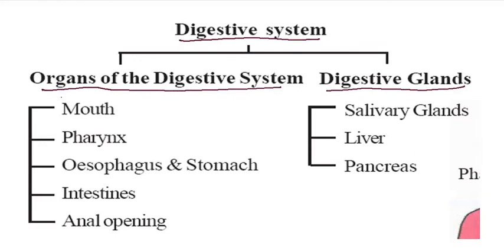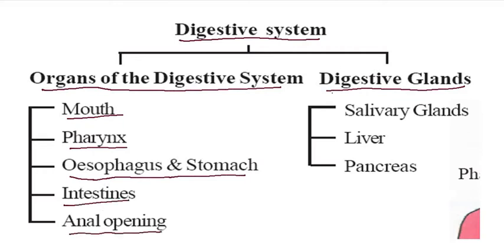Within the organs of the digestive system, first is the mouth, second is the pharynx, and third is the esophagus and stomach, and next is the intestine and anal opening. The digestive glands contain salivary glands, liver, and pancreas.